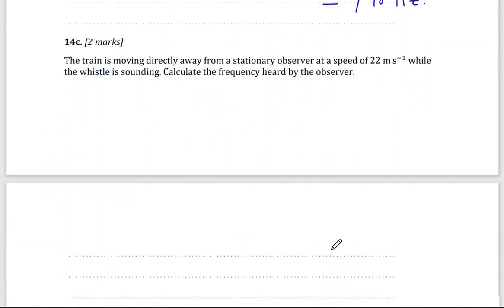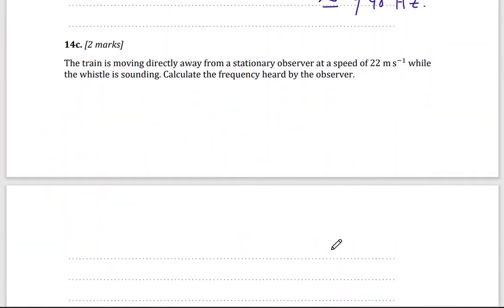The other question is on standing, the second part of the question is on a standing wave. Doppler effect. So here we have a train is moving directly away from stationary observer. Stationary observer, so the velocity of the observer is 0. At a speed, the train is moving at a speed 22, while the whistle is sounding. So this is the velocity of the source of sound, the source of this, the noise, the source of noise.